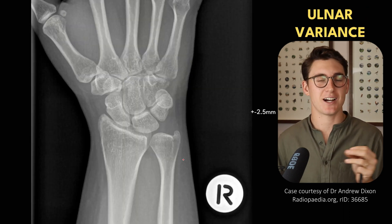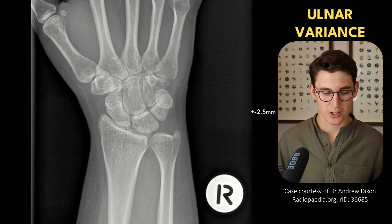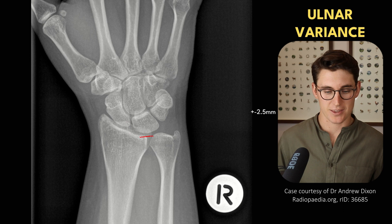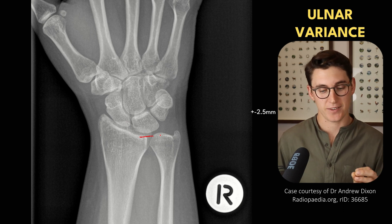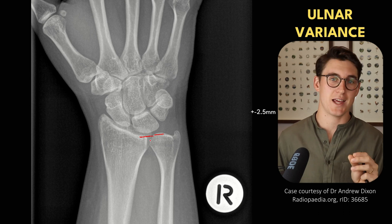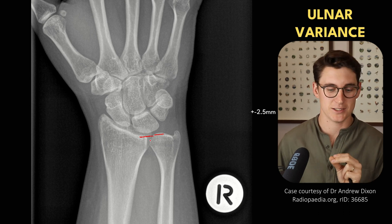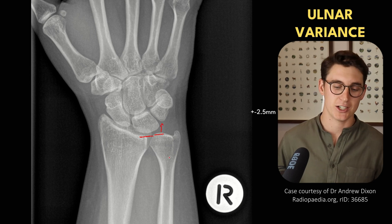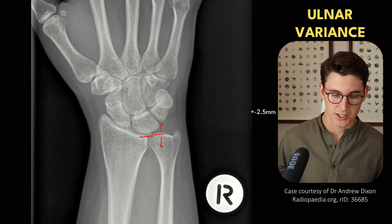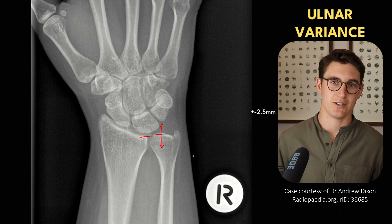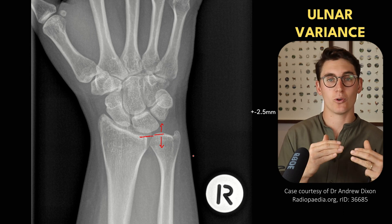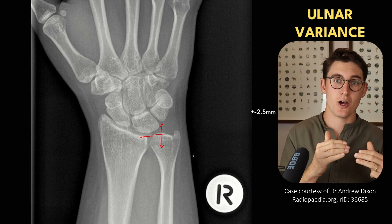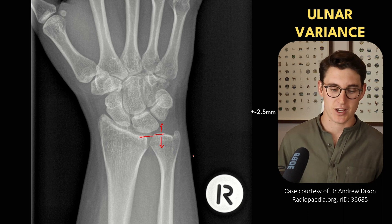The next thing we can look at is ulnar variance. We're looking at the radial articular surface and the variation between the radial surface and the ulnar articulating surface at the radio-ulnar joint. We want the difference between these two surfaces to be less than 2.5 millimeters. If the ulna is deviated distally it's known as positive ulnar variance; if deviated proximally it's called negative ulnar variance. Multiple things including fractures can cause ulnar variance to change.